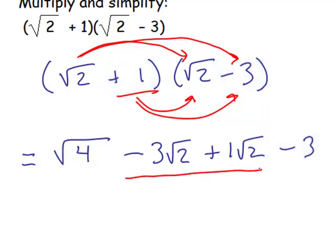These middle two terms are like terms, and they can be combined. At the same time, the square root of 4 is 2 all by itself. So that becomes 2.